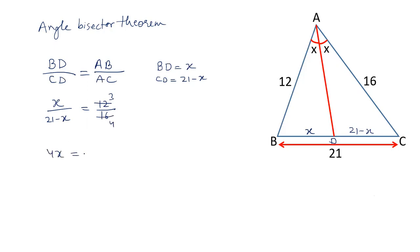Cross multiplication 4X is equal to 63 minus 3X. 4X and 3X will be added. So, that will be 7X equals 63. X equals 9.